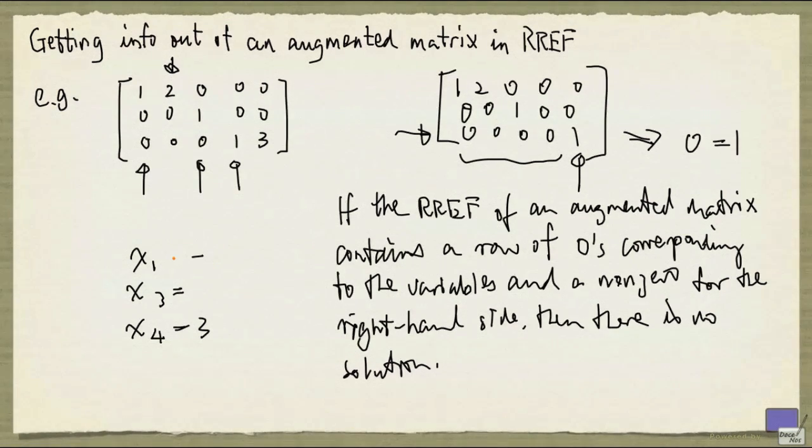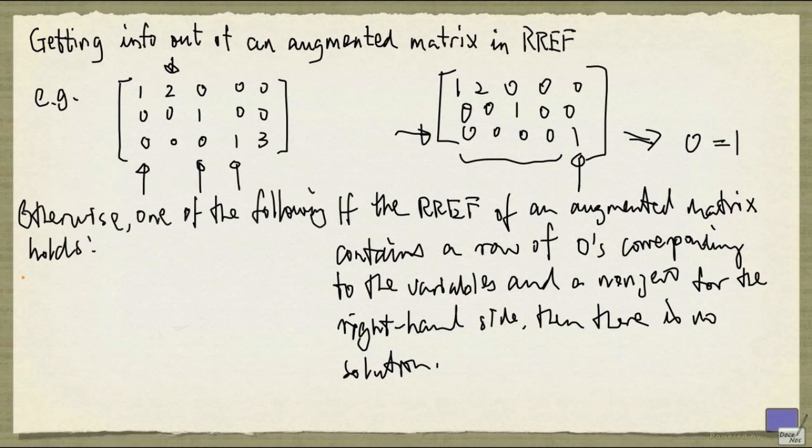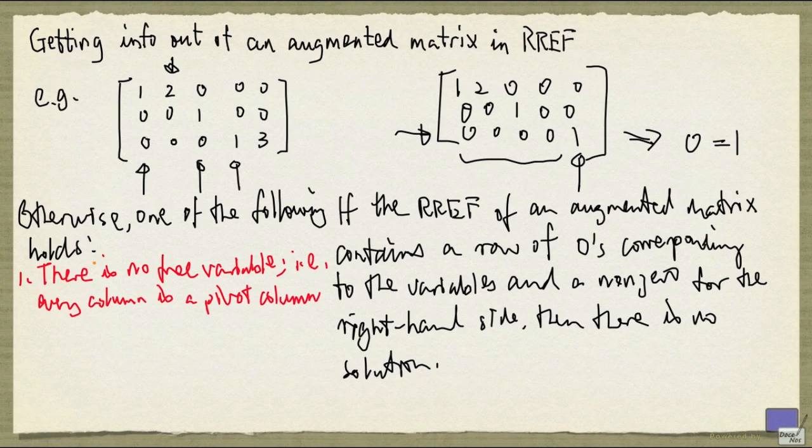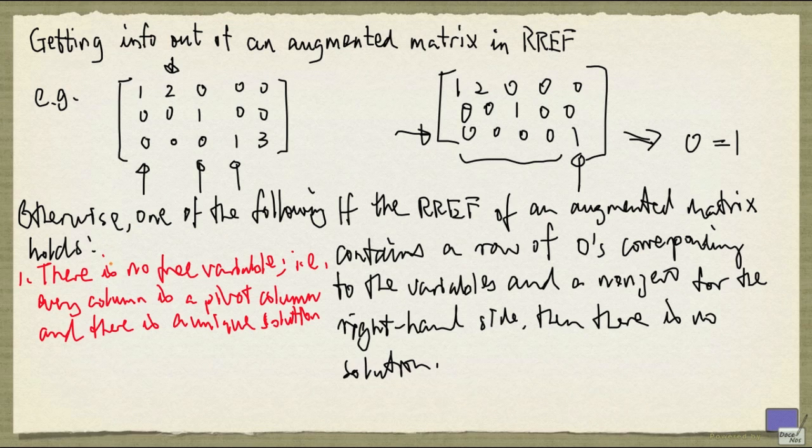Otherwise, it has either one or infinitely many solutions. So, one of the following holds: there is no free variable, that is, every column is a pivot column, and so there is going to be a unique solution.